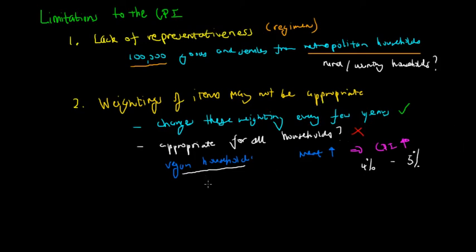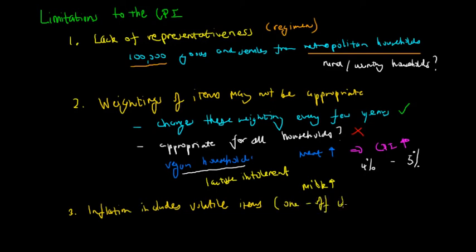Another example could be lactose intolerant people and the price of milk increases or dairy. It wouldn't really affect their spending because they don't actually consume this. But it becomes very hard to tailor the CPI to every specific person and therefore that is another limitation to the CPI. Thirdly, the inflation rate includes volatile items.